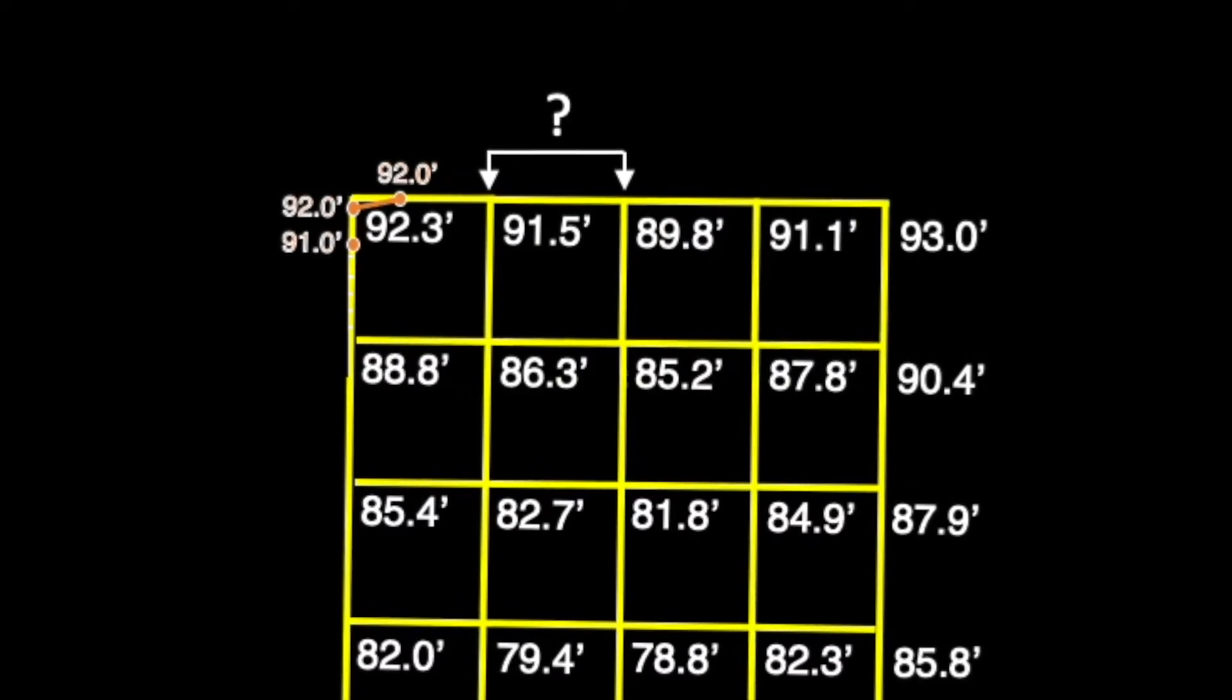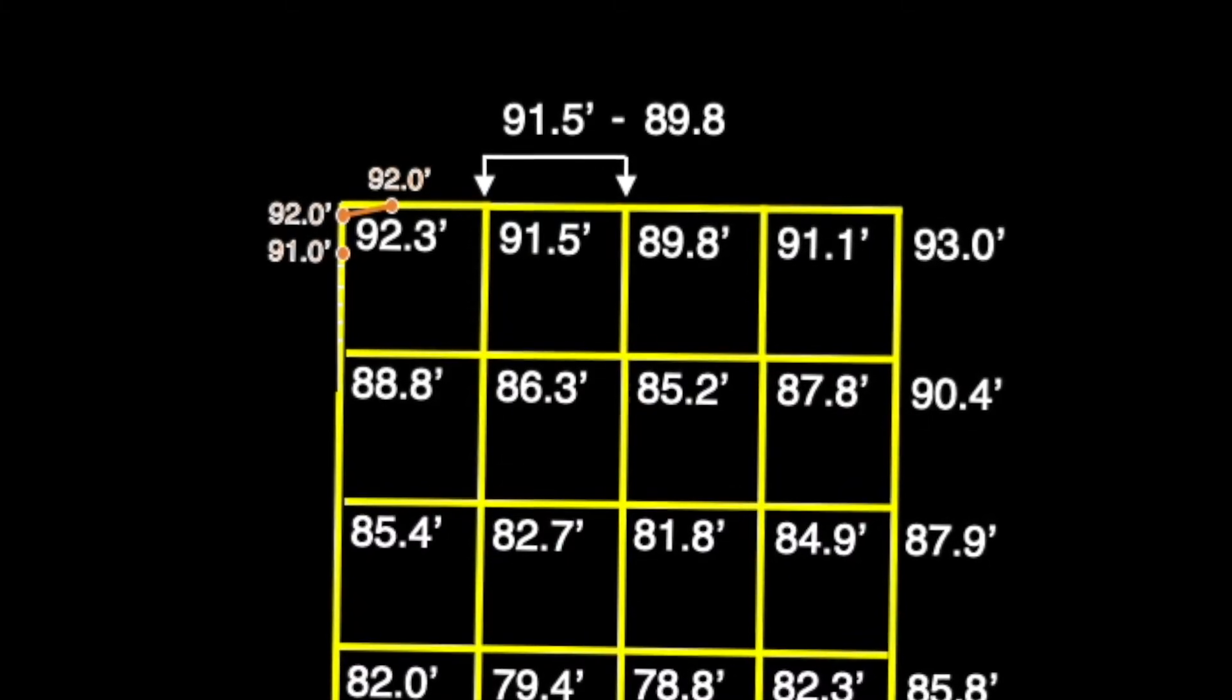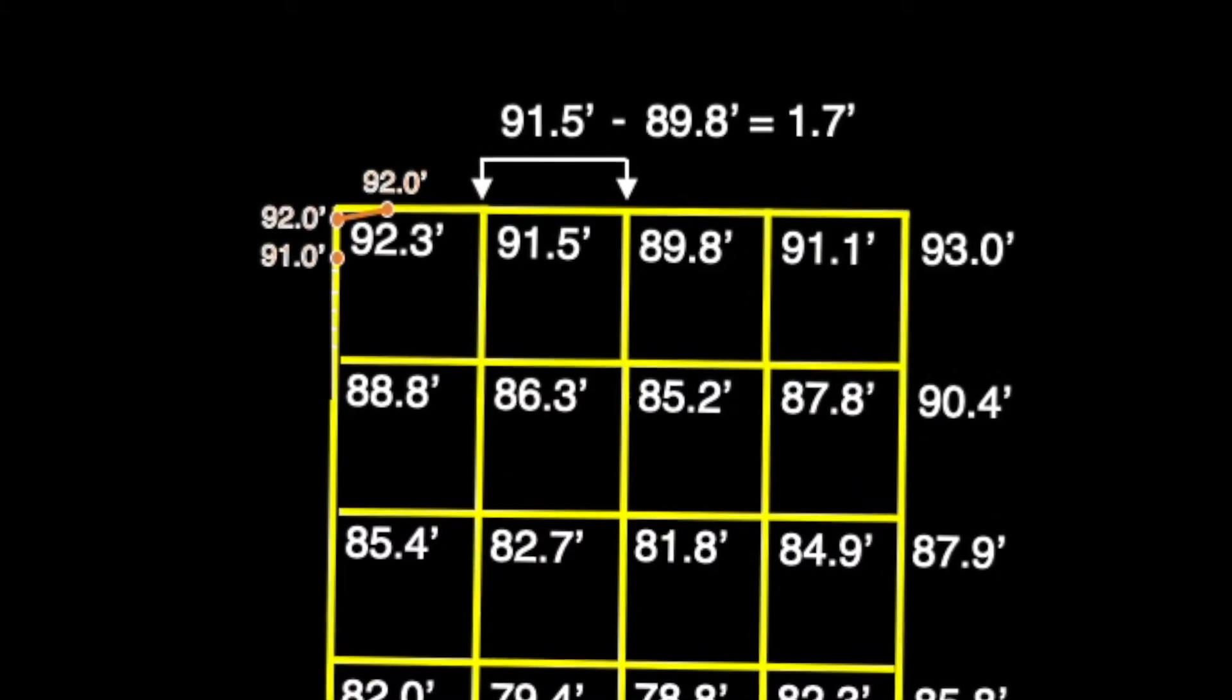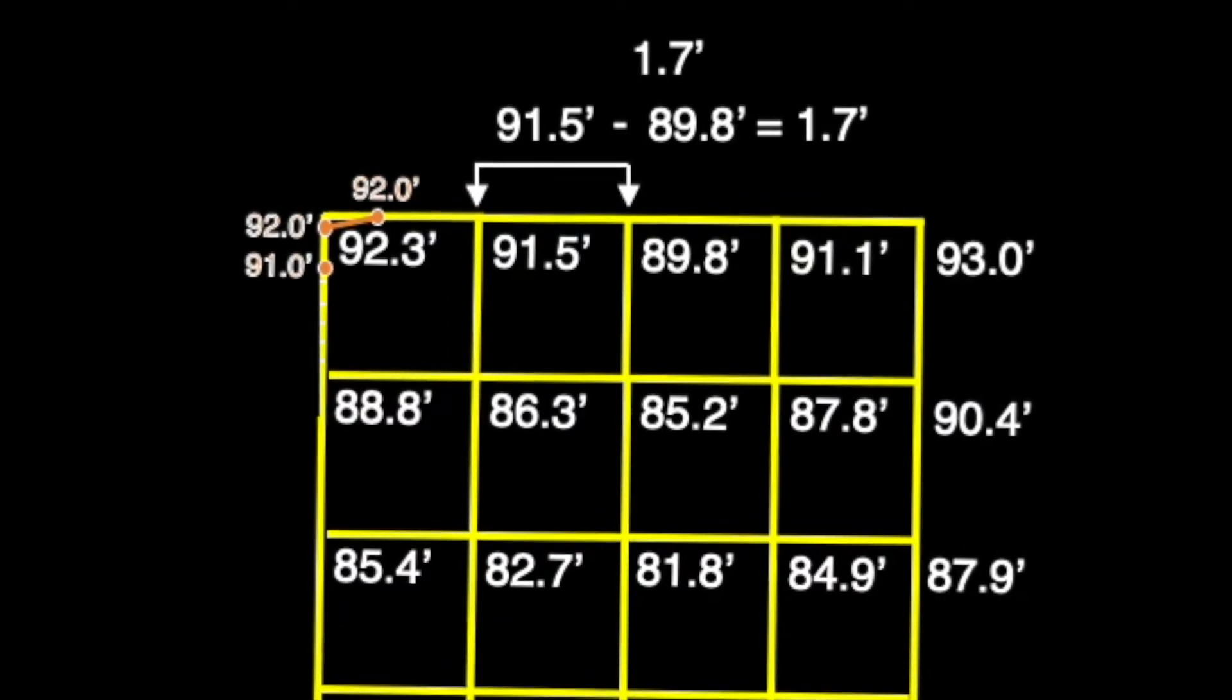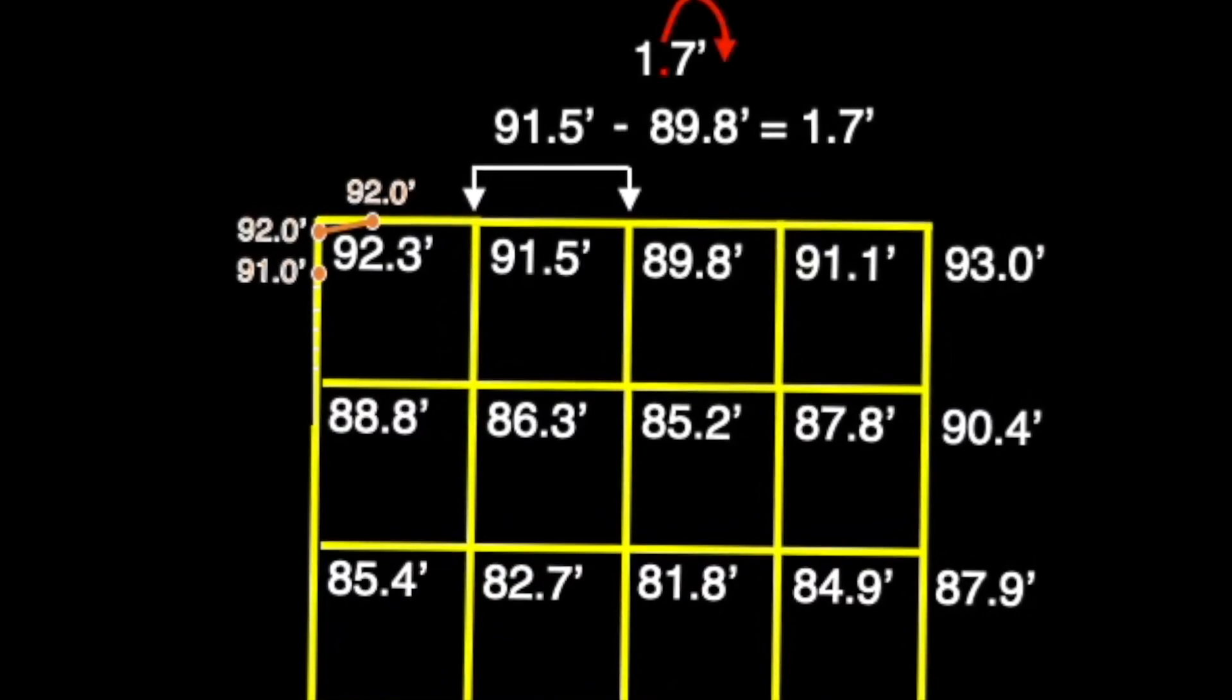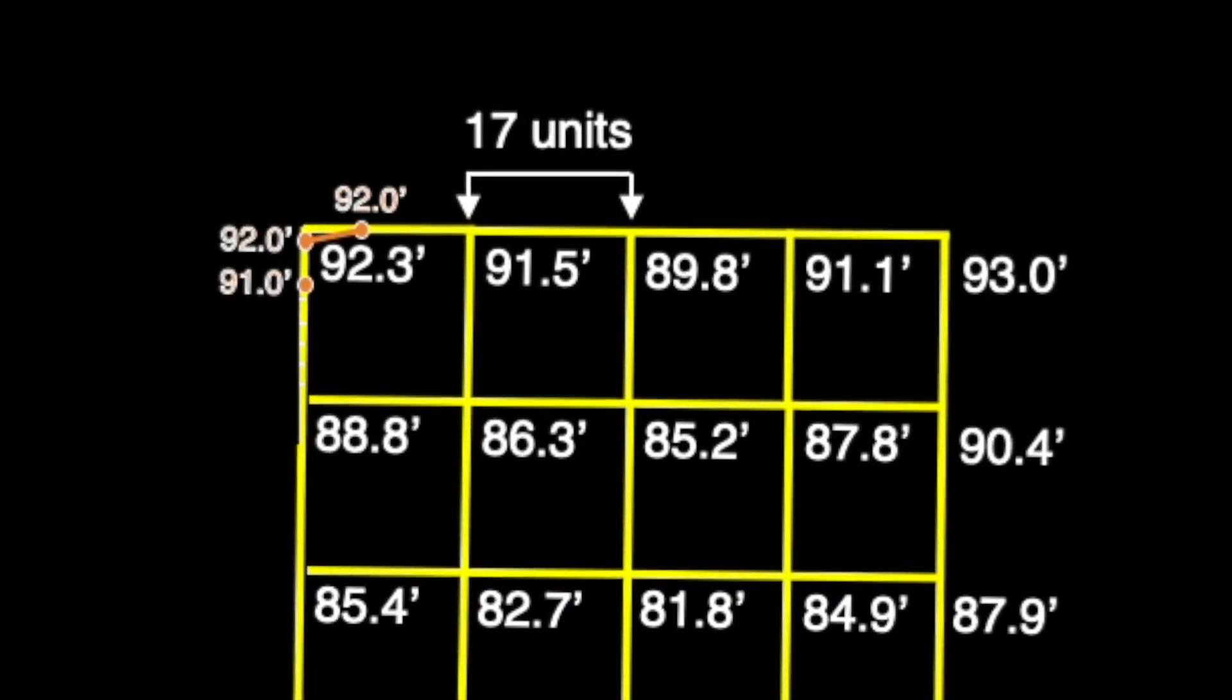Descending from 91.5 feet to 89.8 feet, we subtract the higher elevation by the lower and produce the remaining 1.7 feet. After moving the decimal over one space to the right, we see that we'll need 17 units of space marked out on our line.